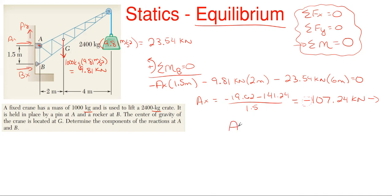Whenever this happens, you pop out a minus sign for your reaction, just drop the minus sign and flip your arrow. We originally assumed it to the right, well the minus sign tells us it's in the opposite direction so it's actually going to the left. So Ax is 107.24 kilonewtons to the left.